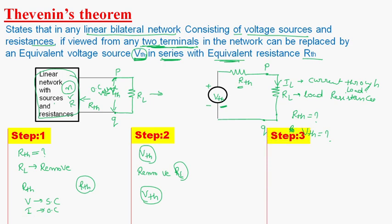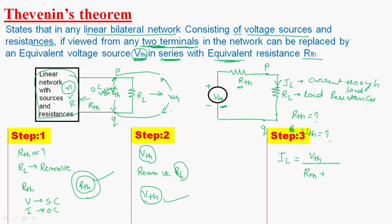In the final step, we find the current flowing through the load resistance. The current through the load is given by: IL is equal to VTH divided by (RTH plus RL), where VTH is the Thevenin's voltage or open circuit voltage appearing across the two terminals, RTH is the Thevenin's resistance, and RL is any load resistance.